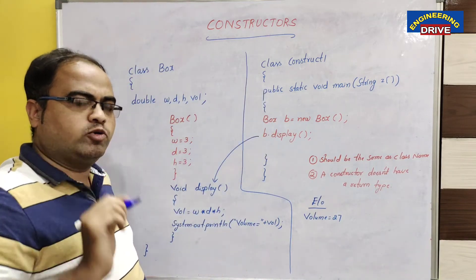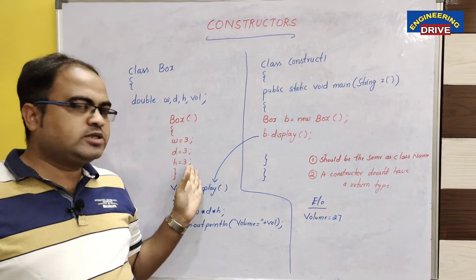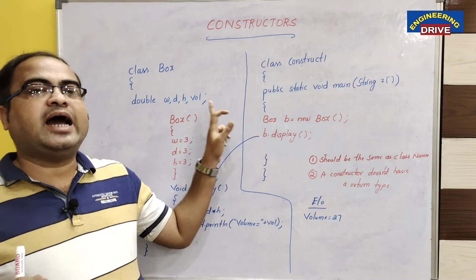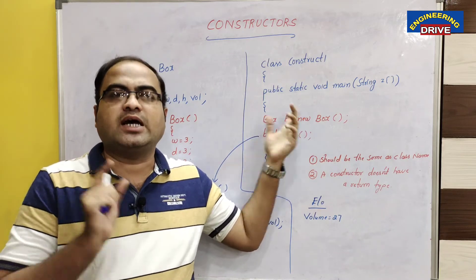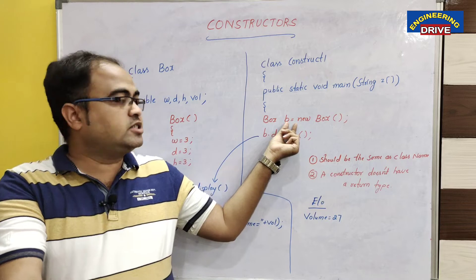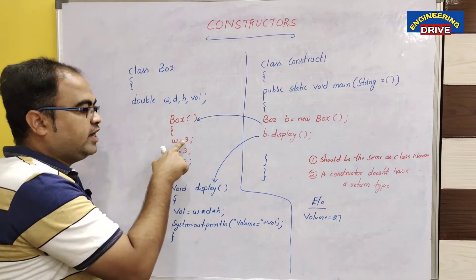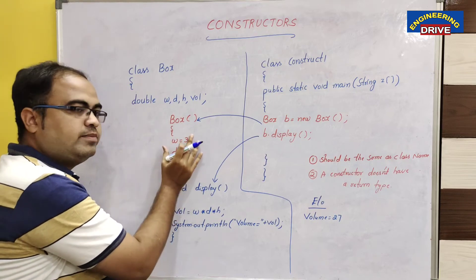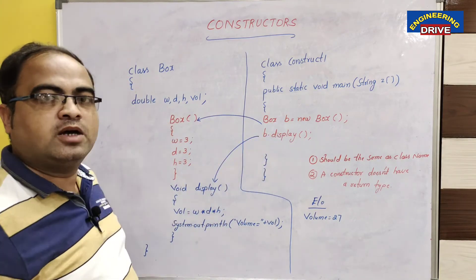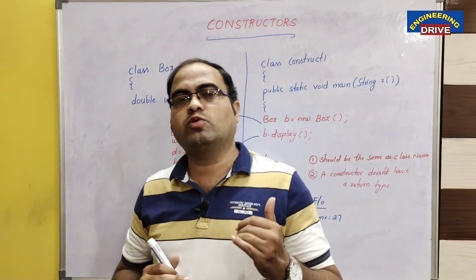Now you may ask: sir, you have not called the constructor — then how were these values initialized? This is the third point about constructors: a constructor is automatically called whenever an object is created for the class. So 'b' is an object of class Box. Whenever you create an object, the constructor is called automatically. Control comes to the constructor, the values for w, d, h are initialized, and then b.display() calculates and shows the volume.